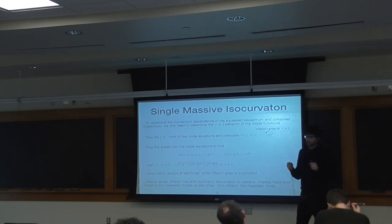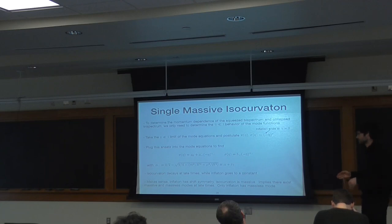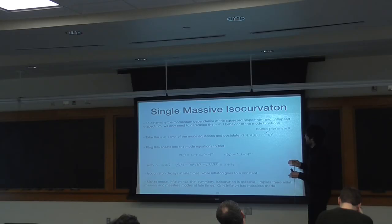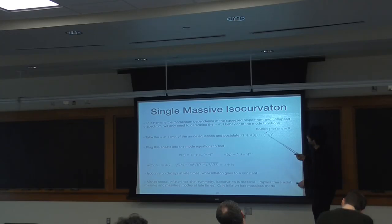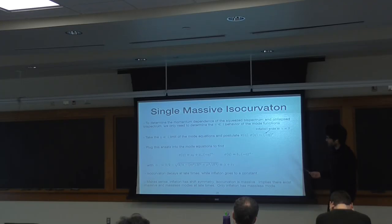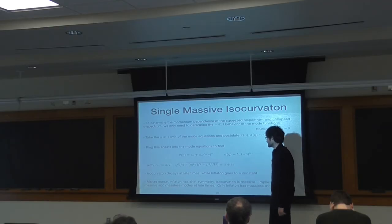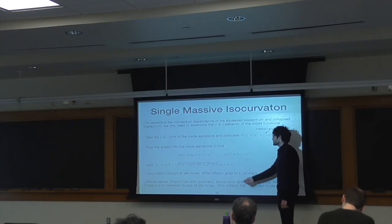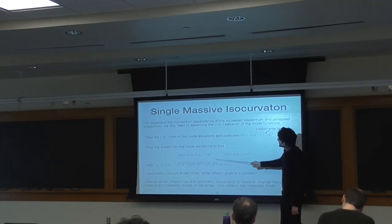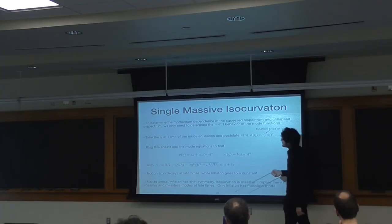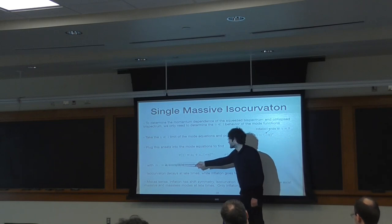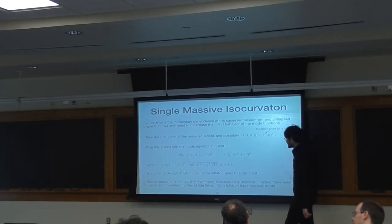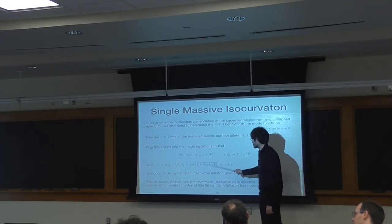If you have one single massive isocurvaton, the Lagrangian simplifies to two fields in a de Sitter background with some kinetic mixing. Varying it gives you coupled mode equations with specific time dependence — pretty difficult to solve in full generality. But for the squeezed bispectrum and collapsed trispectrum calculations, we don't need the full solutions to understand the most salient features. Note that the mode functions only depend on k through the variable kappa = k*tau. Because the squeezed bispectrum and collapsed trispectrum have one leg whose wave vector is much smaller than the others, we can Taylor expand the mode function for that squeezed leg in the small-kappa limit and factor out the momentum dependence.